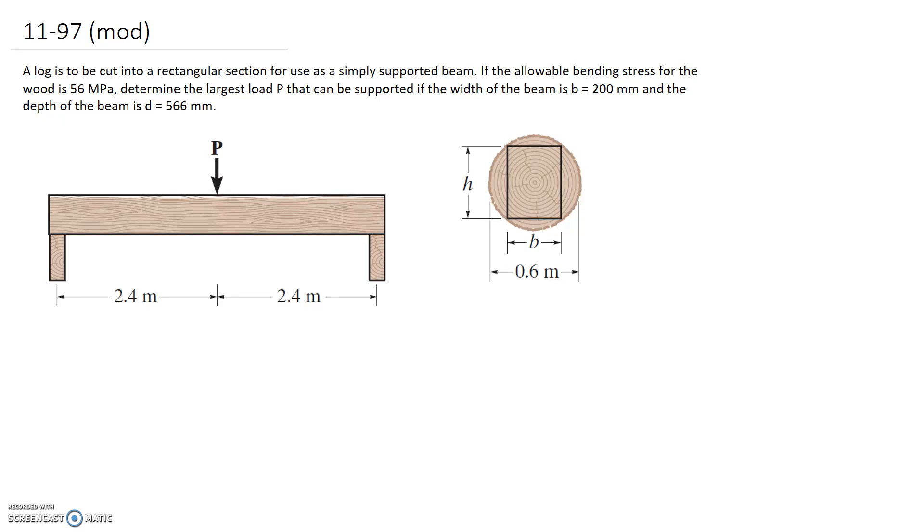A log is to be cut into a rectangular section for use as a simply supported beam. If the allowable bending stress for the wood is 56 MPa, determine the largest load P that can be supported if the width of the beam is 200 mm and the depth of the beam is 566 mm.